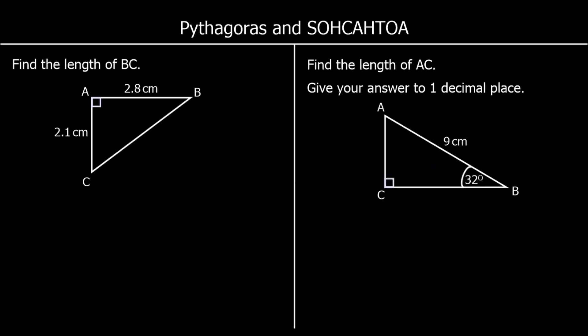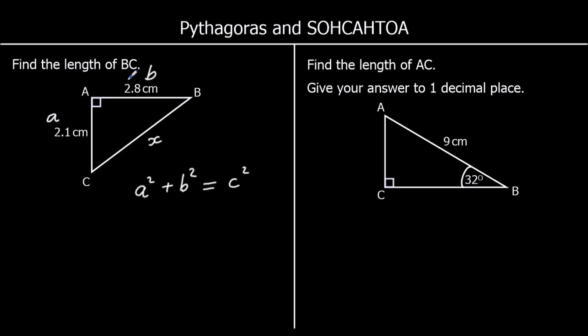Question one: find the length of BC. So the length of BC is this one here. What are we using to solve it? It's only lengths, so this is a Pythagoras question. Pythagoras says that a² + b² = c². So the two shortest sides, squared and added together, equal the longest side squared.